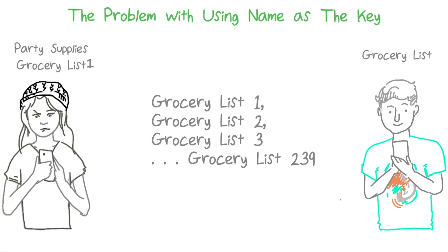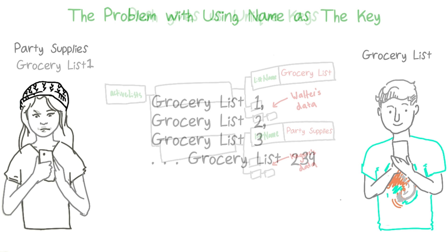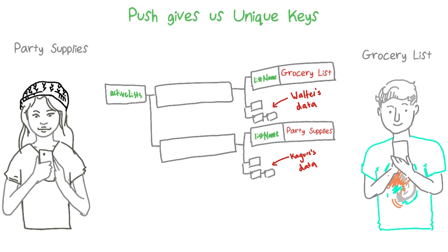Just because one person has a shopping list named grocery list, that doesn't mean nobody else using the app should also have a list called grocery list. Another option is to not use list names as keys and instead find something that is certain to be unique. Enter push. Push generates a unique ID for you to store a list under, and it ensures uniqueness.